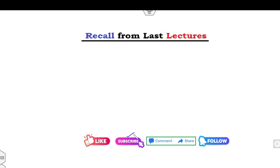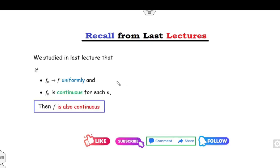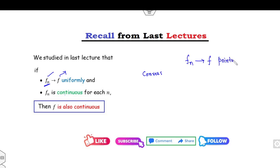So what we have discussed in our last lectures: if you have a sequence of functions which converges uniformly to f, and each fn is continuous, then f is also continuous. On the other hand, can we say the converse of this theorem also holds? That means if the sequence of functions fn converges to f pointwise, and fn as well as f are both continuous, can you say fn converges to f uniformly?